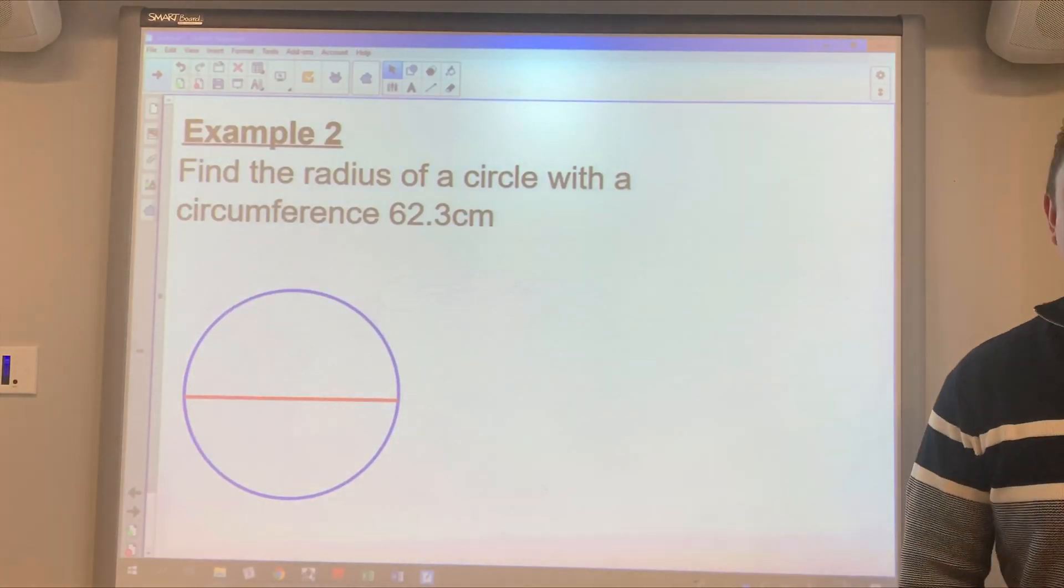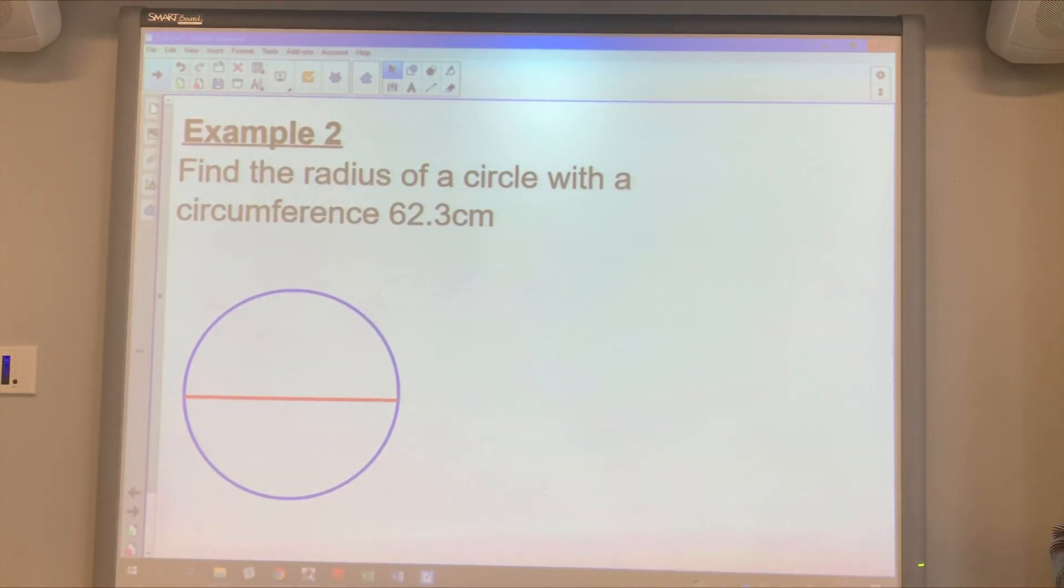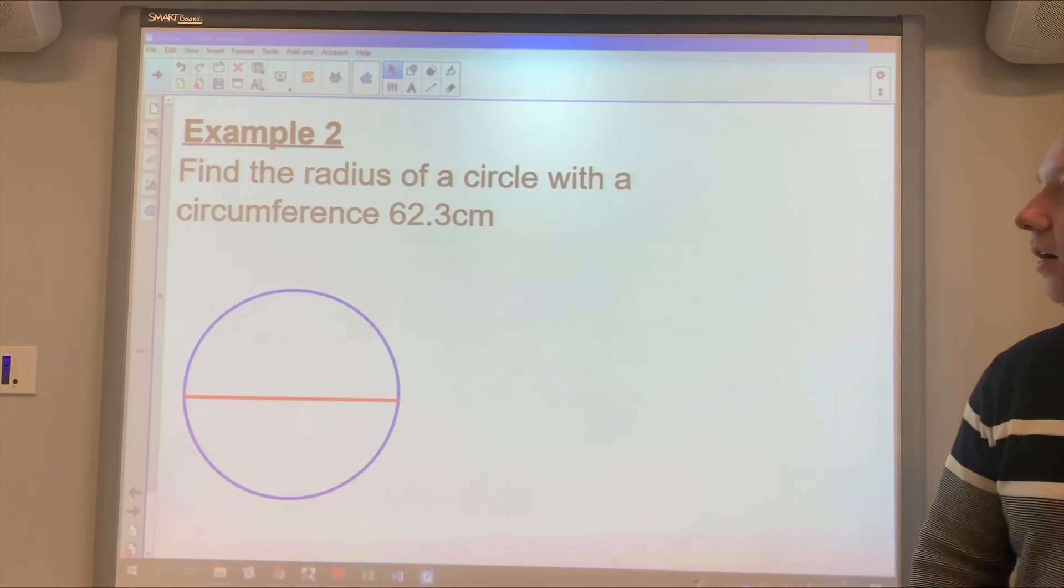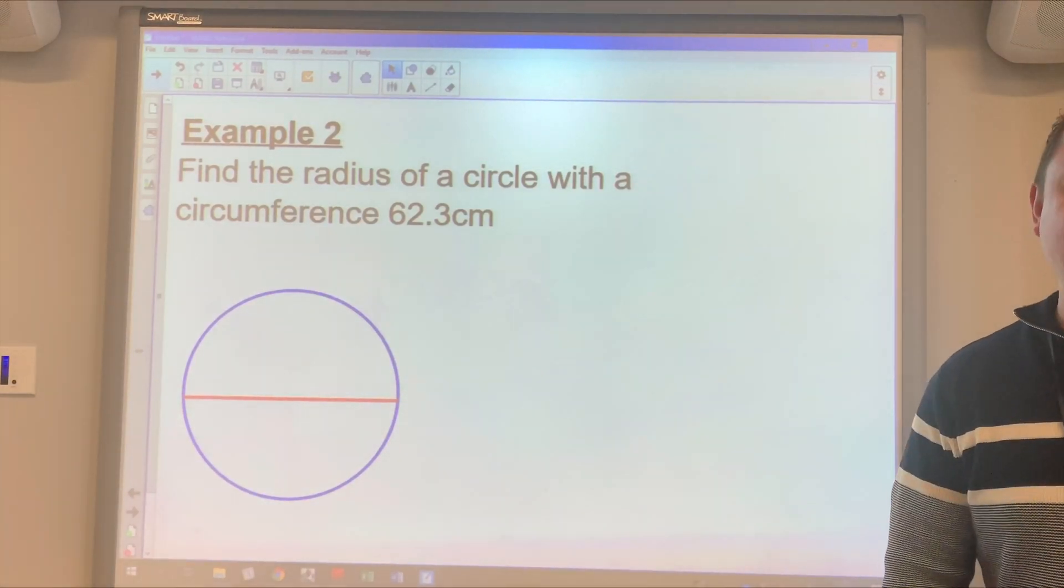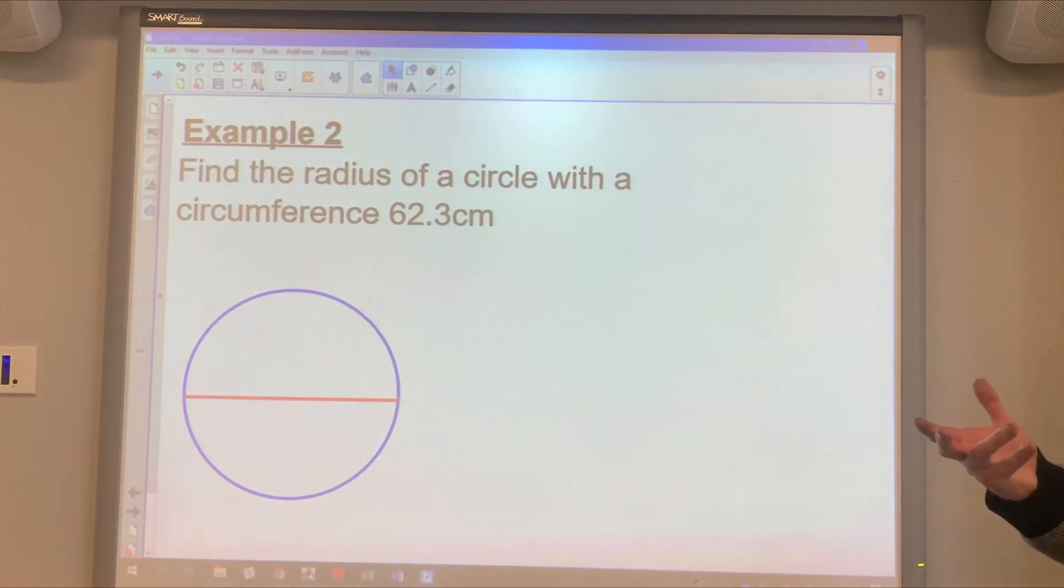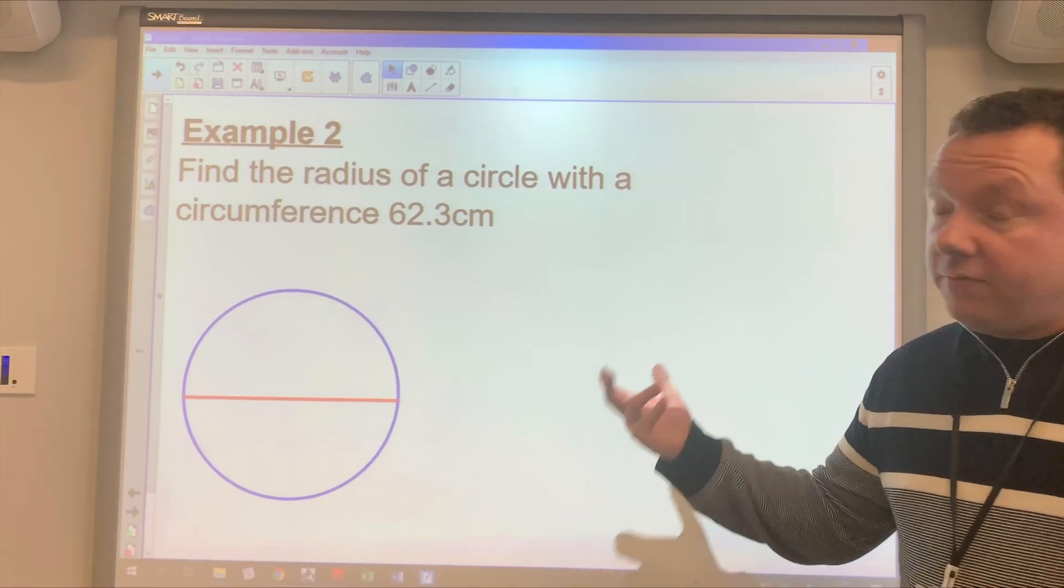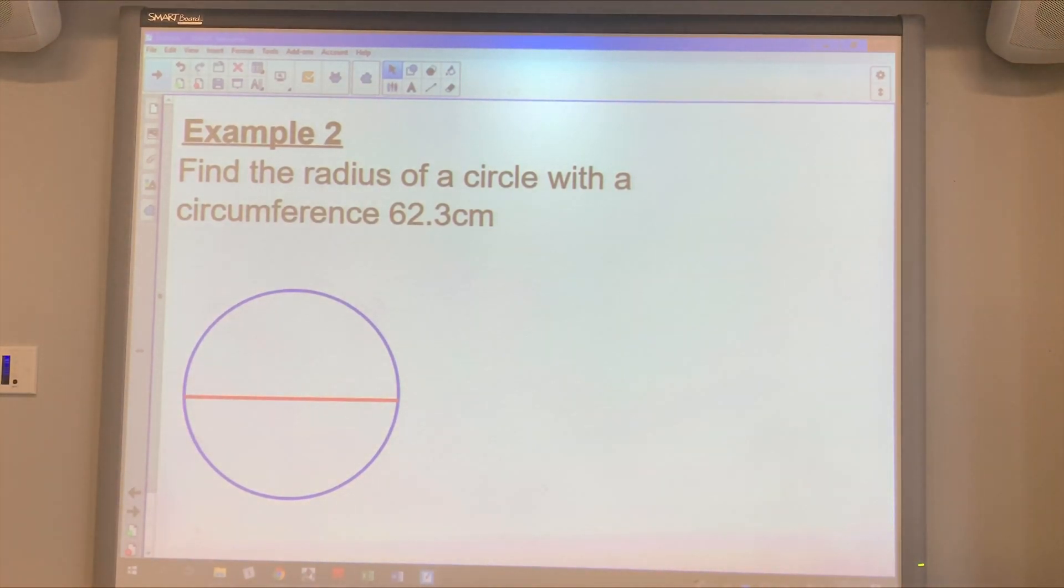Okay, moving on to example two. Example two says find the radius of a circle with a circumference of 62.3 centimeters. So this time it's asked to find the circumference. So it's asked to find the radius instead of the diameter.